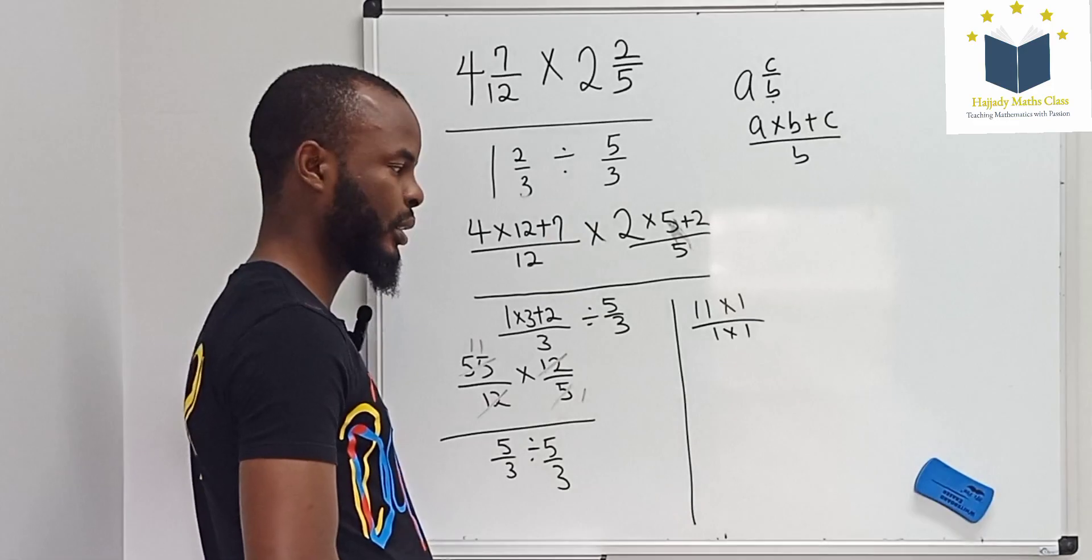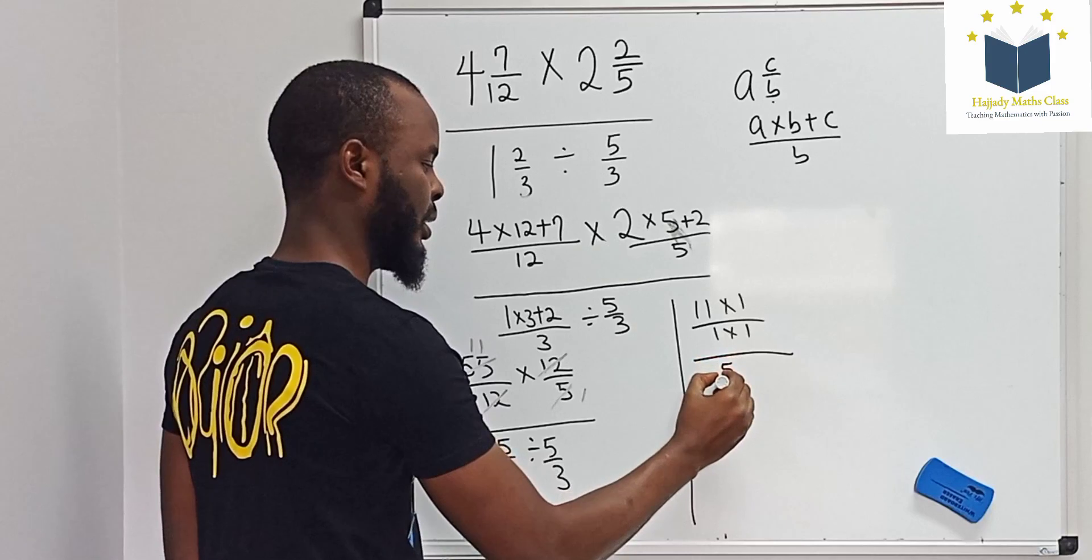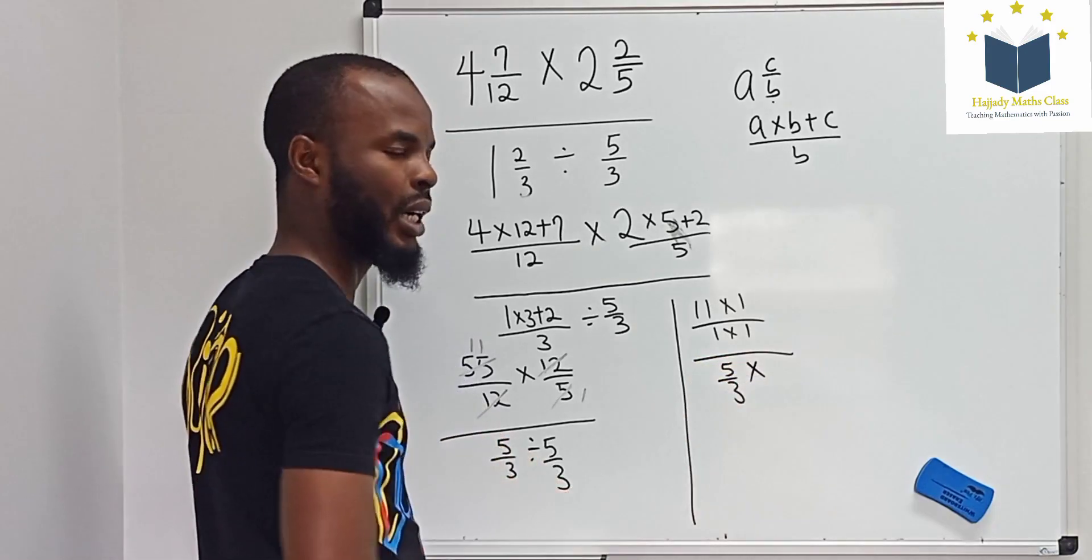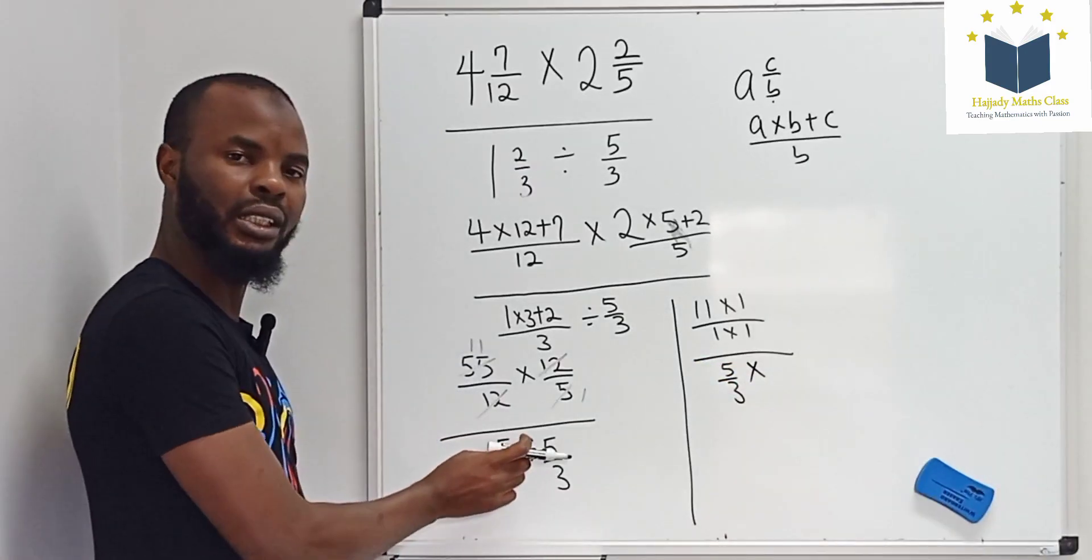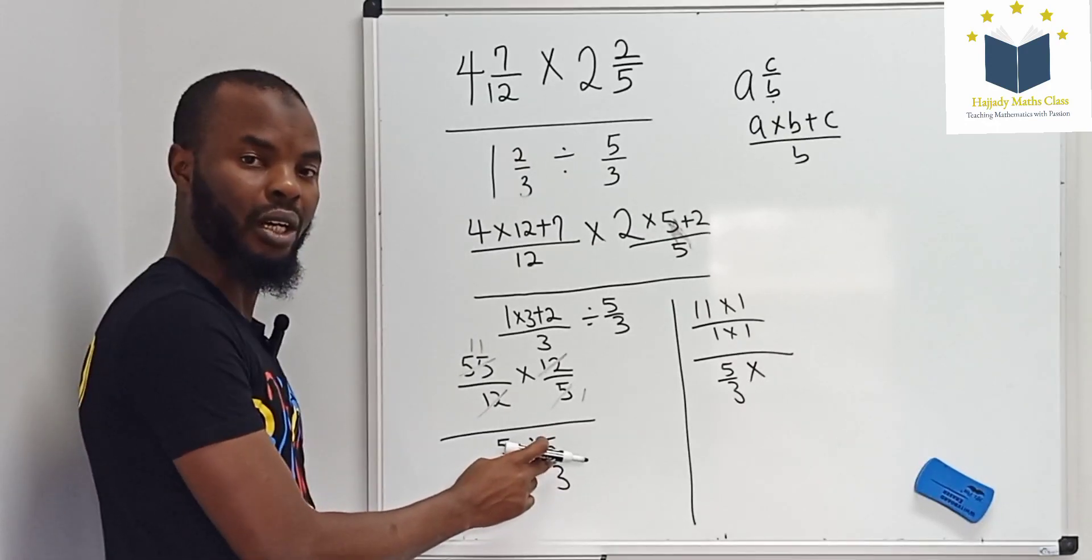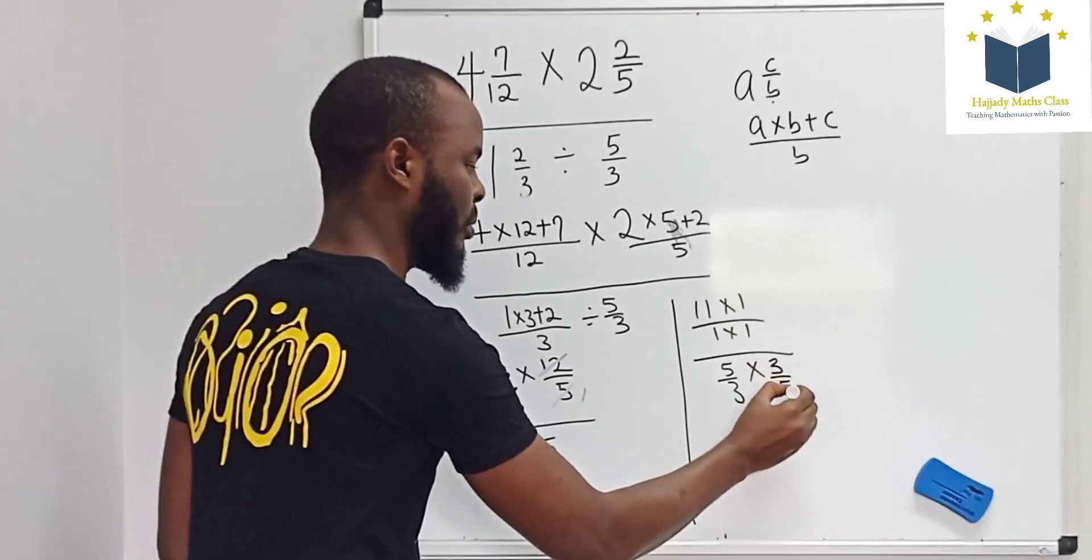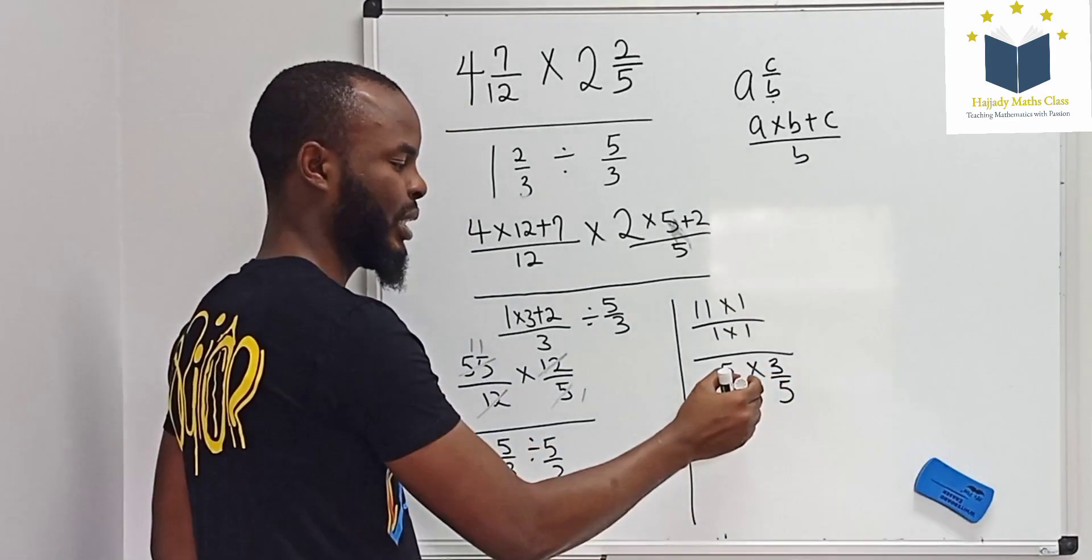Divided by 5 over 3. So when the division sign changes to multiplication in mathematics, we find the reciprocal of the next value. So the reciprocal is just going to be 3 over 5. So the same thing is happening here.